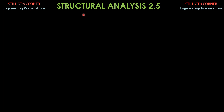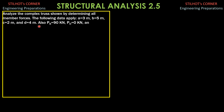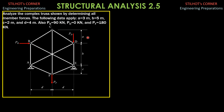There is another problem on complex truss. Analyze the complex truss shown by determining all member forces. The following data apply: A is 3 meters, B is 5 meters, C is 2 meters, and D is 4 meters. Also, P sub B is 90 kilonewtons, P sub D is 0, and P sub F is 180 kilonewtons. Here is the given figure with the loads.